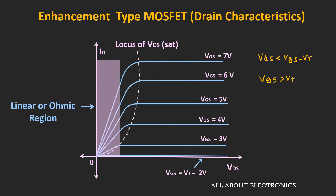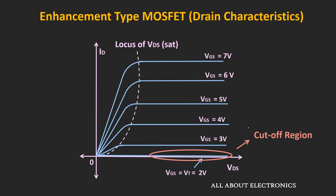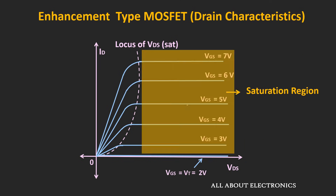The next region is the cutoff region: whenever Vgs is less than Vt, the current through the MOSFET is zero and the MOSFET remains in the OFF condition. The third region is the saturation region — whenever the MOSFET is operated to the right of the parabolic locus, it is in saturation. Mathematically, this is when Vds is greater than or equal to Vgs minus Vt. This covers all the drain characteristics and the different regions of operation of the enhancement type of MOSFET.